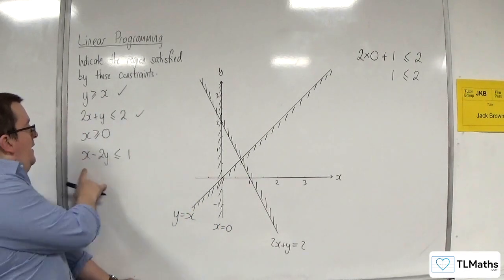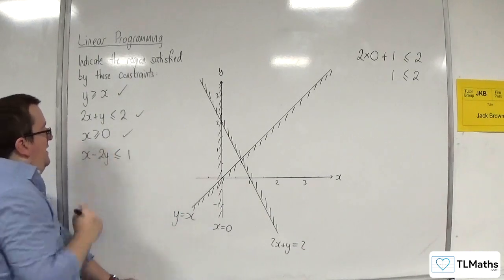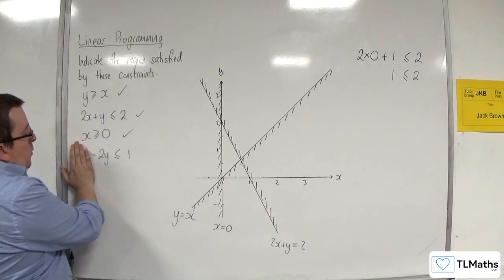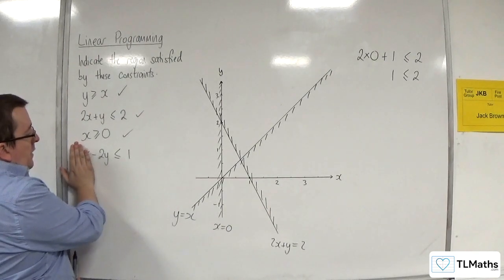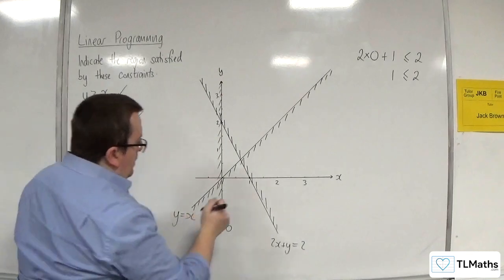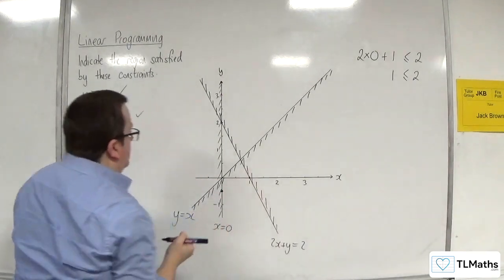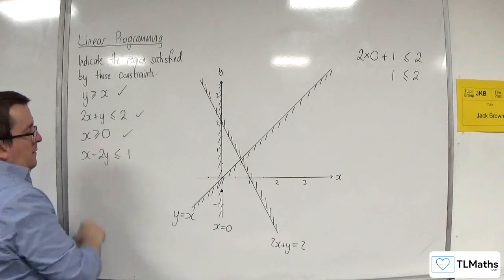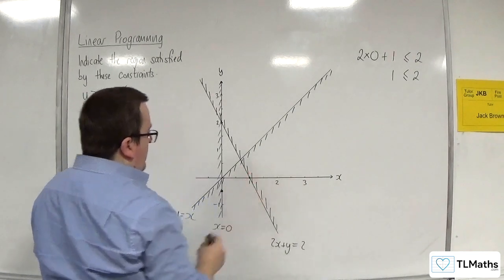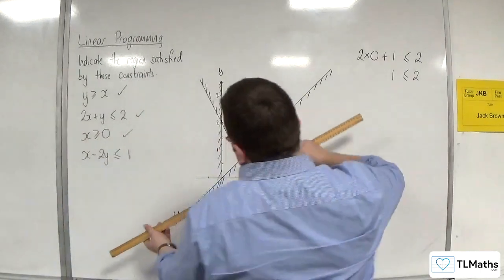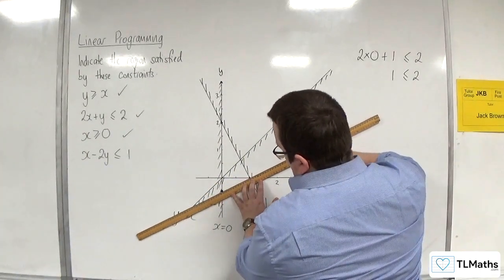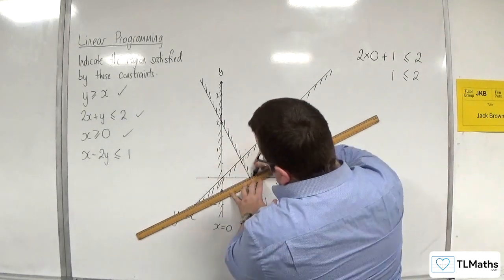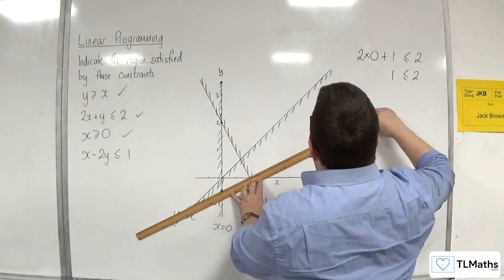And lastly, we've got x take away 2y is less than or equal to 1. So when x is 0, y will be equal to minus 1 half. So there. And when y is 0, x will be equal to 1. So in that point there. So draw a line going through those two.